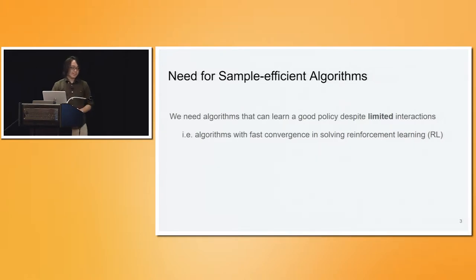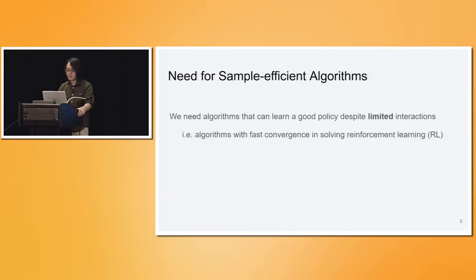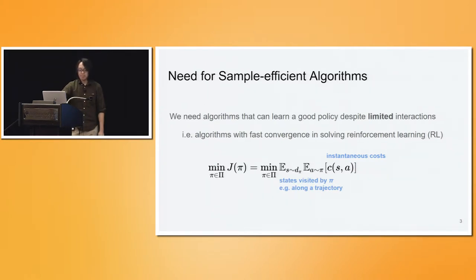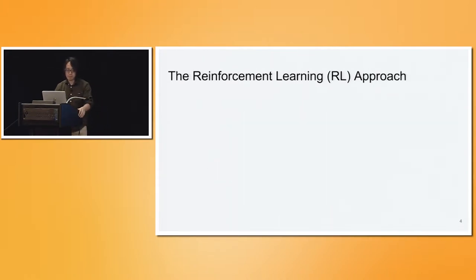We can think of this problem as a convergence problem in solving a reinforcement learning problem, in which the agent is trying to minimize the expectation of some instantaneous cost under the state-action distribution visited by the learner. Here, the state distribution might be the average state distribution along a trajectory in a POMDP or MDP problem.